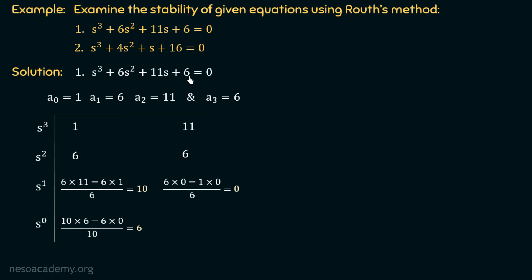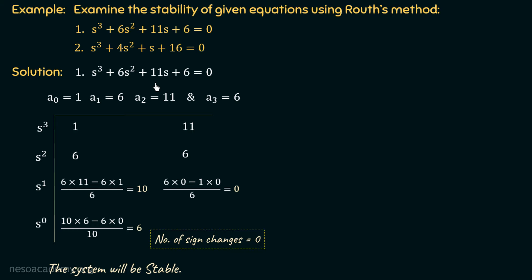Checking the Routh stability criteria: the first column contains 1, 6, 10, 6 — all positive, with zero sign changes. Since all coefficients in the first column have the same sign, this system is a stable system.